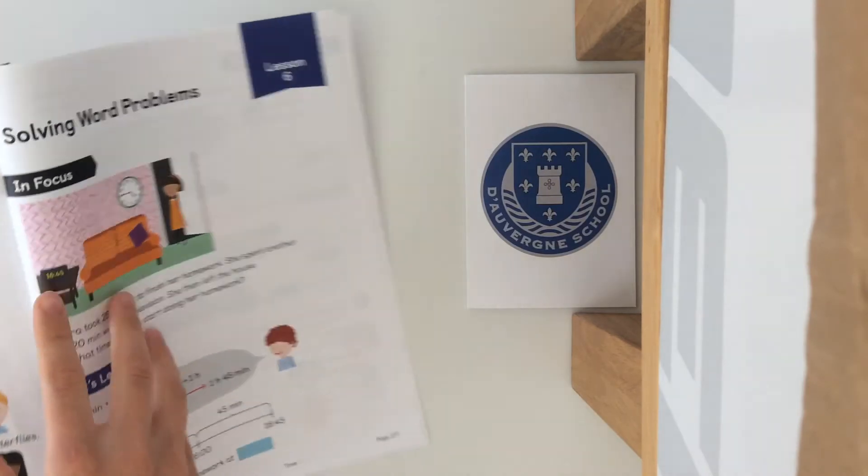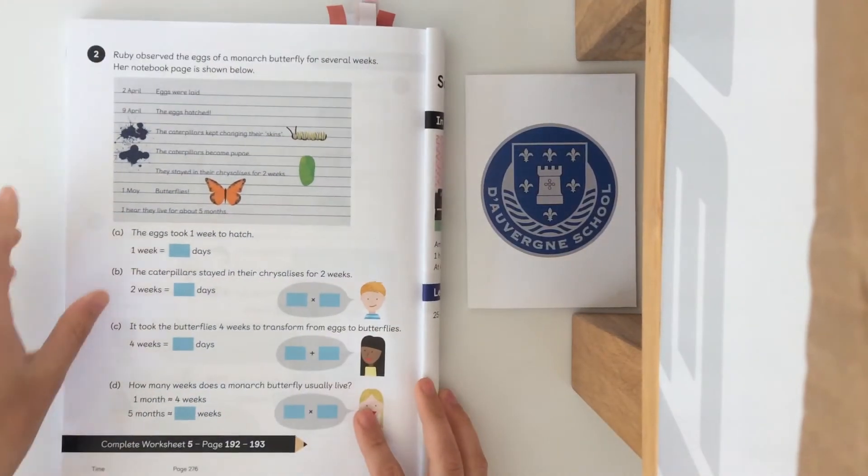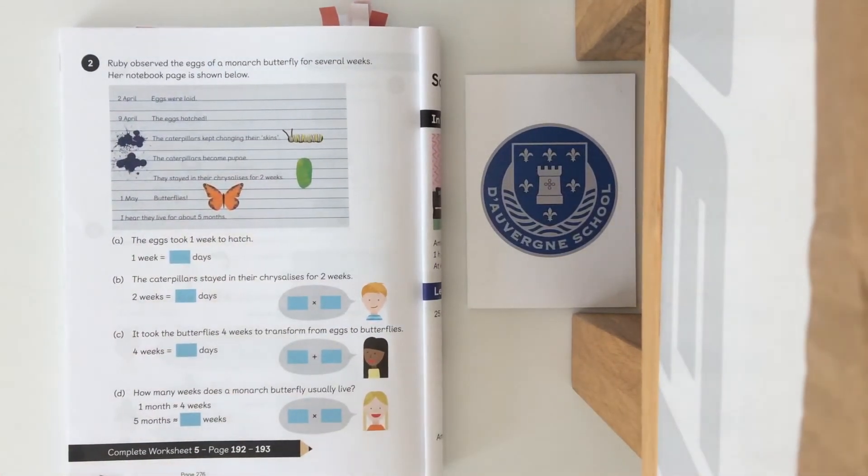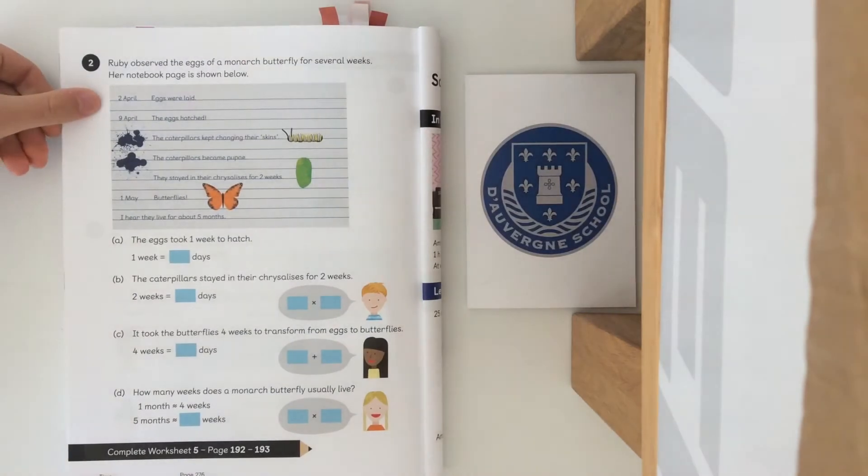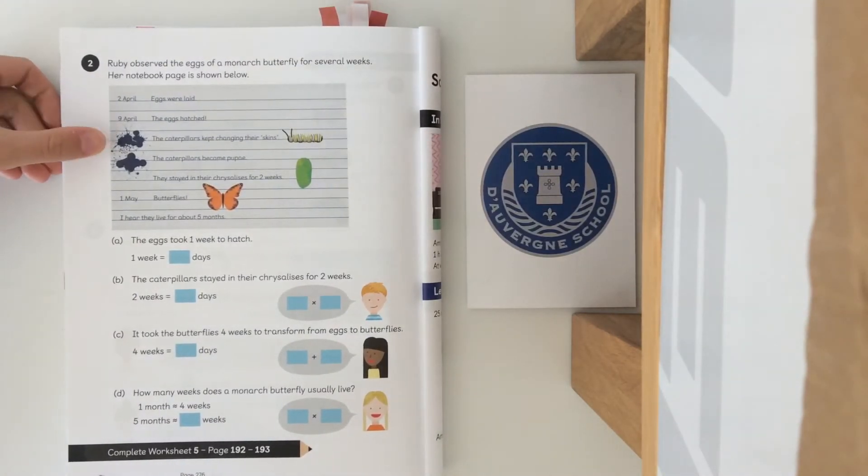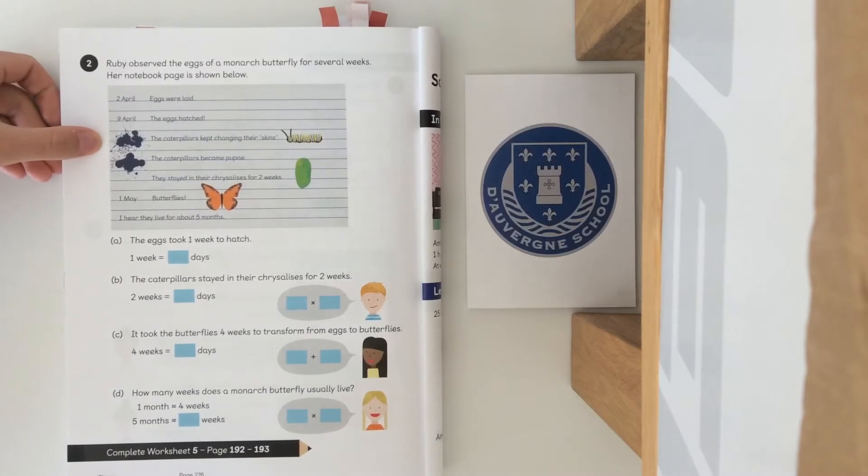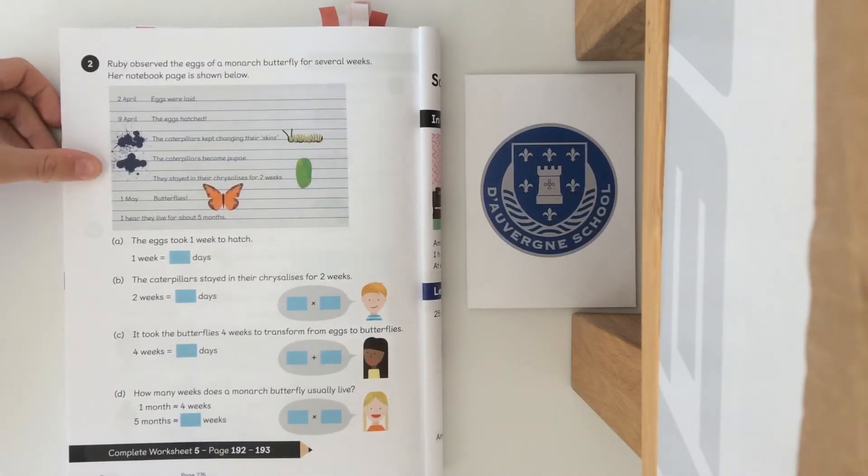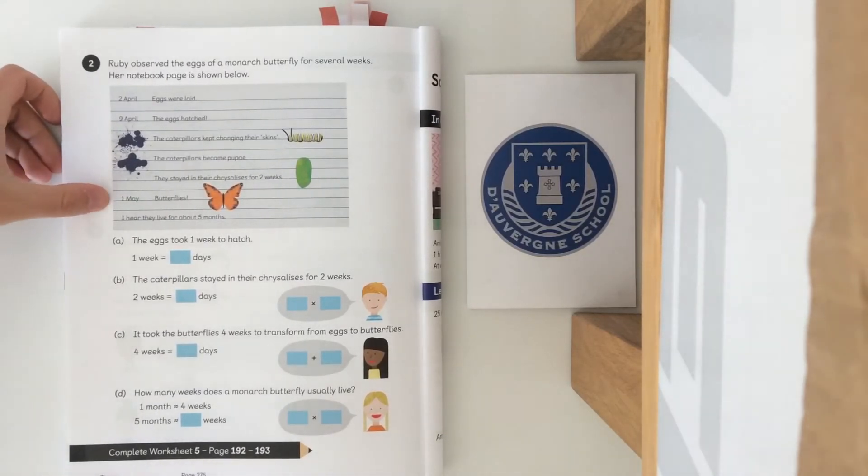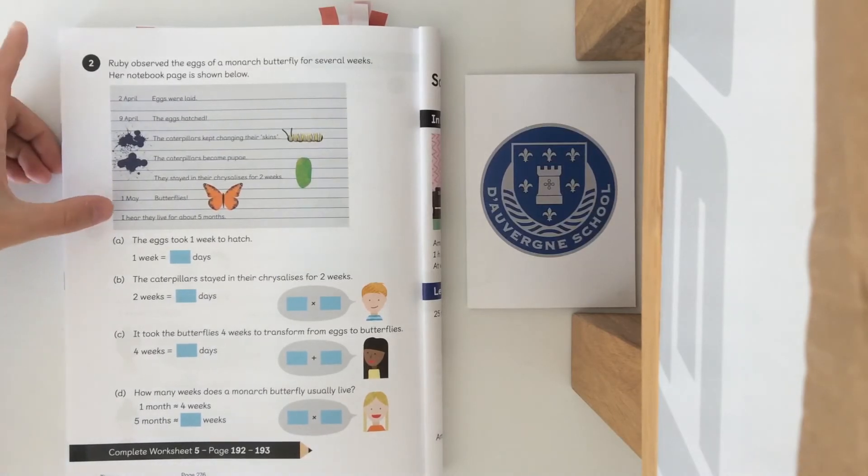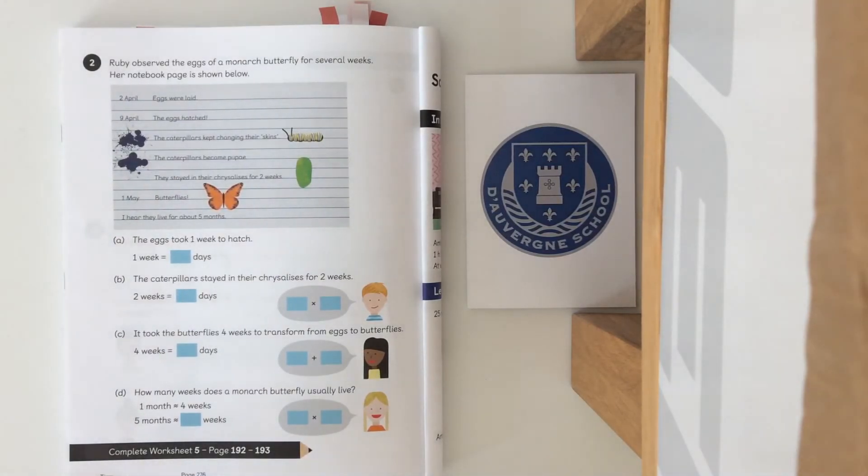We've got another section of the guided practice which I'd like you to have a go at. It says Ruby observed the eggs of a monarch butterfly for several weeks. Her notebook page is shown below. On the 2nd of April eggs were laid. On the 9th of April the eggs hatched. On another day the caterpillars kept changing their skins. The caterpillars became pupae and stayed in their chrysalises for two weeks. On the 1st of May butterflies emerged. They lived for about five months.